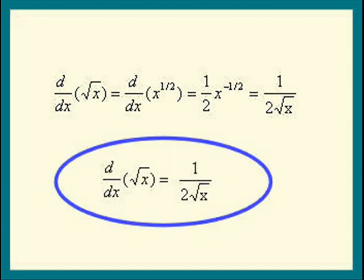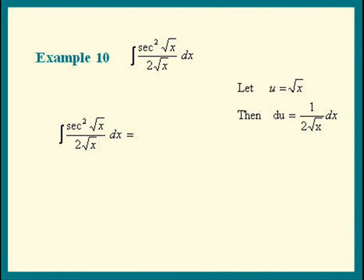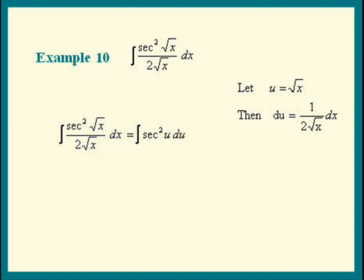We use this so often that it helps to memorize it. Let's get back to our integration problem. u is square root of x, so the integral becomes the integral of secant squared u — and the rest is equal to du. It fits the formula exactly. We get tangent of u plus C. Substitute square root of x back in for u and we're done.